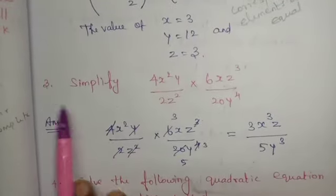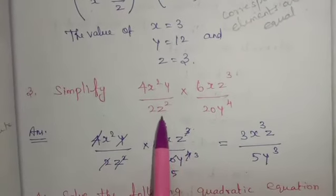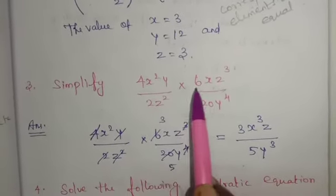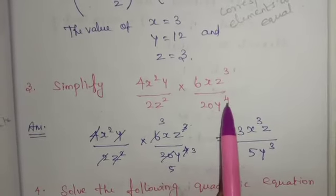Sum number 3: Simplify 4X²Y by 2Z² into 6XZ³ by 20Y⁴.